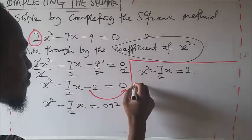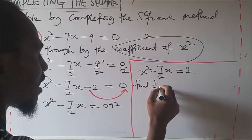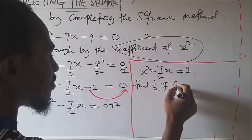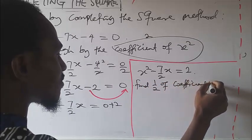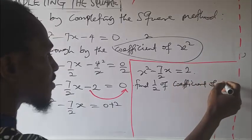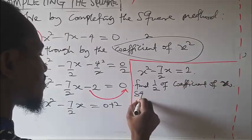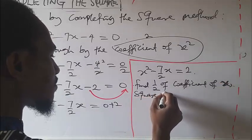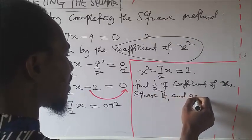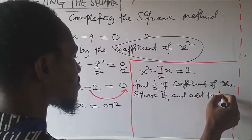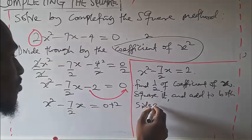That's step 1 done. Now step 2: find half of the coefficient of x, square it, and add to both sides of the equation.